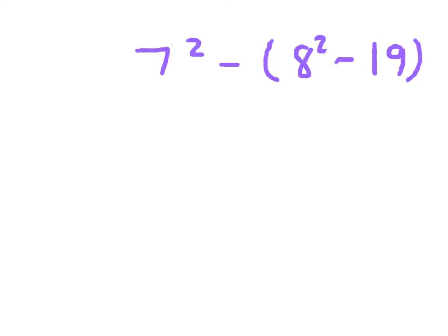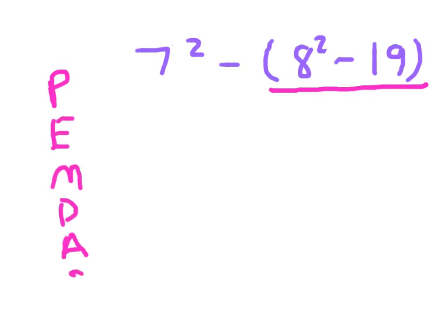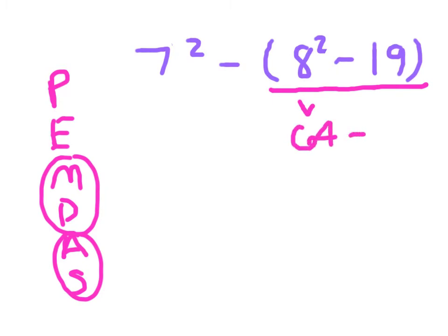We've put some exponents in there now. This expression is read 7 squared minus (8 squared minus 19). With the order of operations, we work with our parentheses first. We've got 8 squared minus 19. Following PEMDAS, the exponent occurs first. The first exponent we see is 8 squared within the parentheses. 8 squared is 64. So we have 64 minus 19, which evaluates to 45.